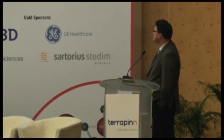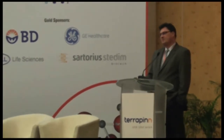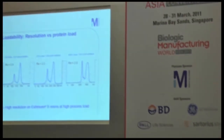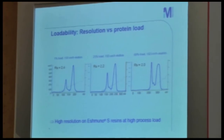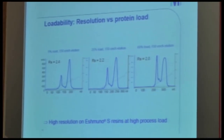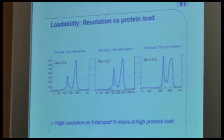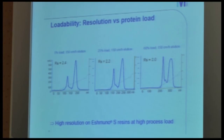Meaning you can meet two of the parameters defining productivity — selectivity and throughput — with one product. We talk about capacity as factor number three. We are proud to announce that the chromatographic separation on the tentacle-grafted ion exchange resin remains stable and robust at high capacity load. So driving the load of a resin up to utilize that expensive product to the best of its extent will still allow an operator to run the process efficiently.